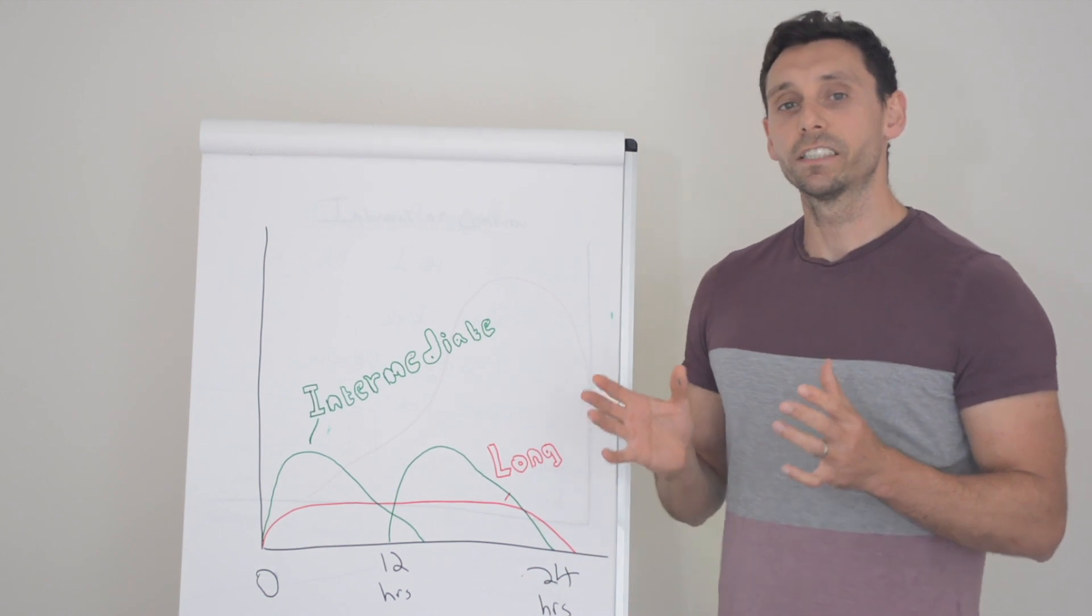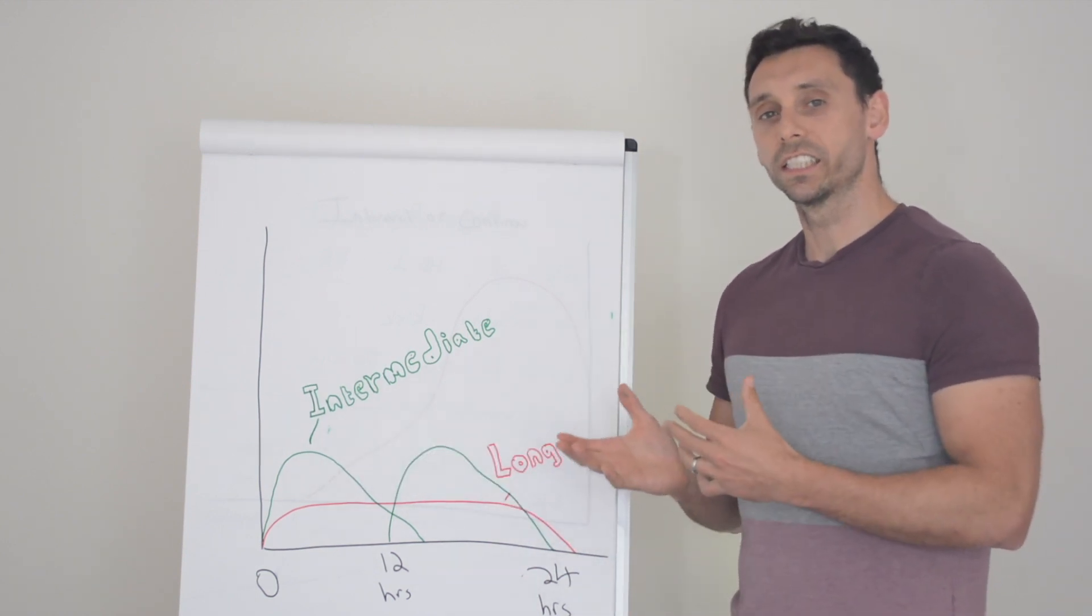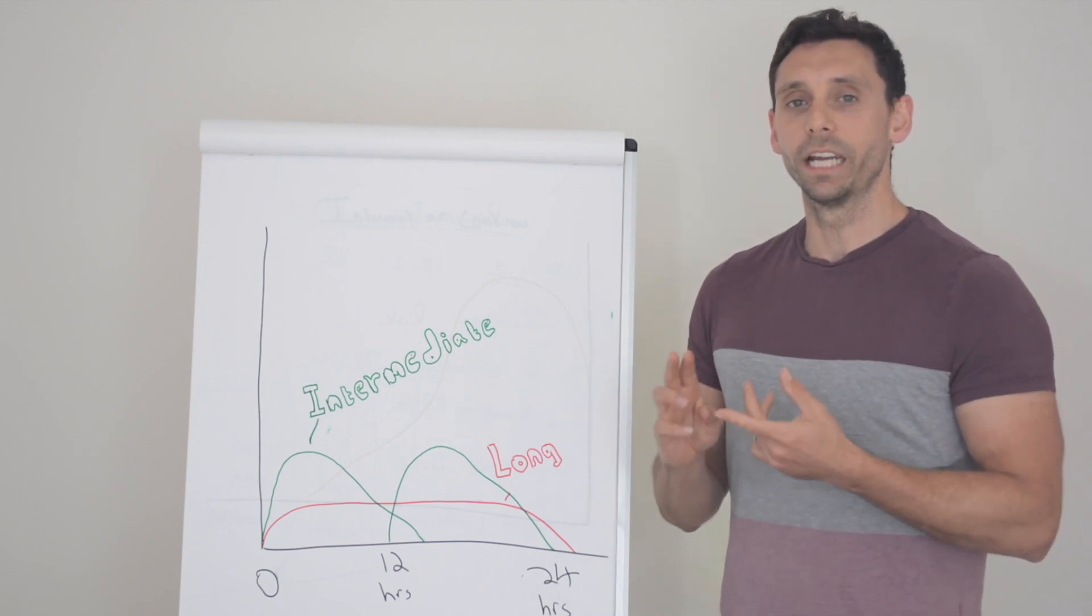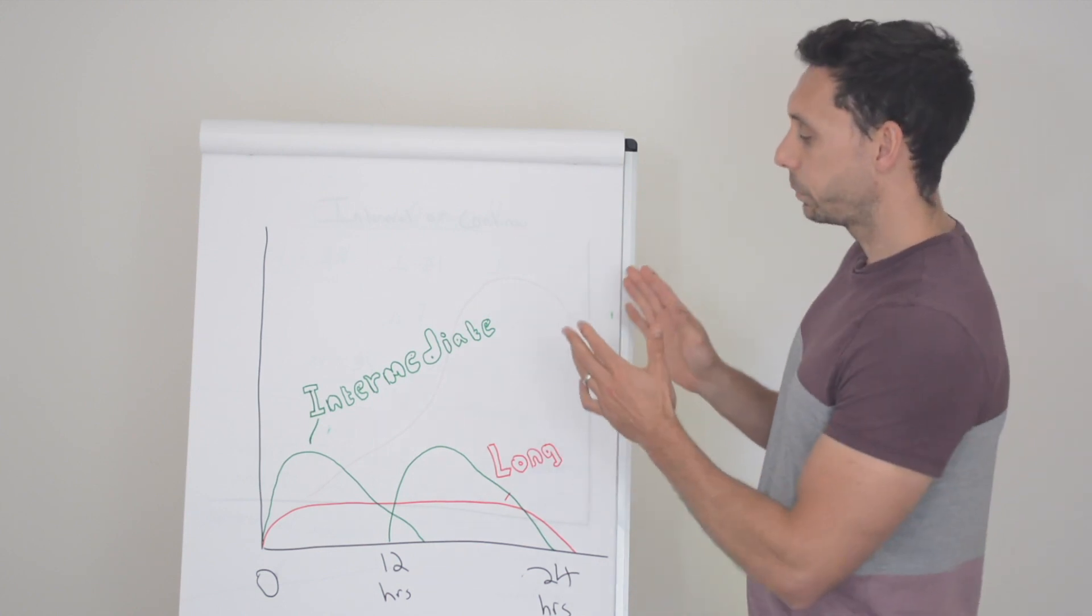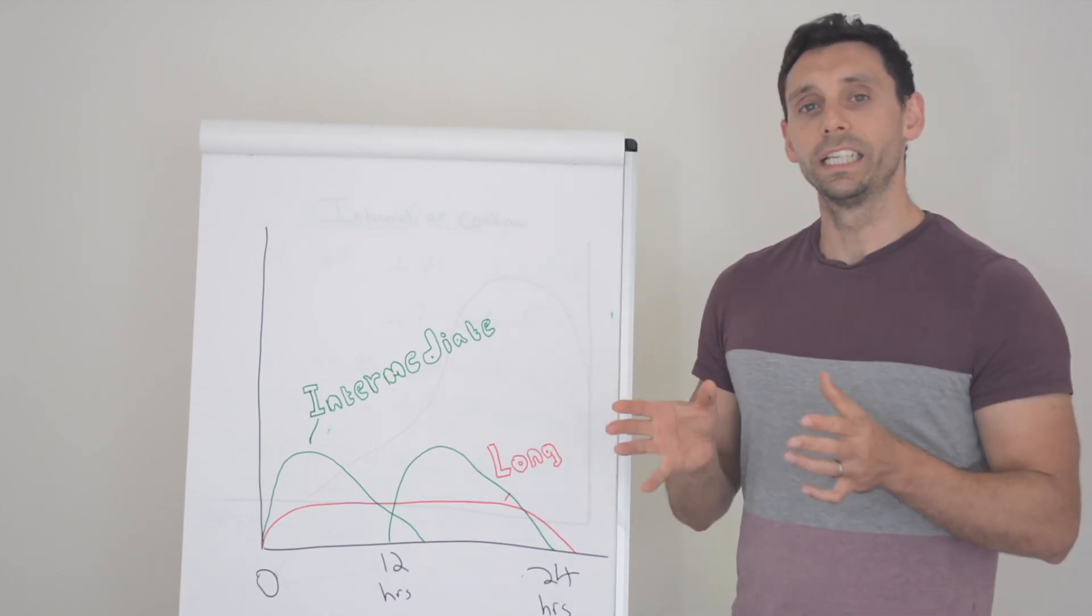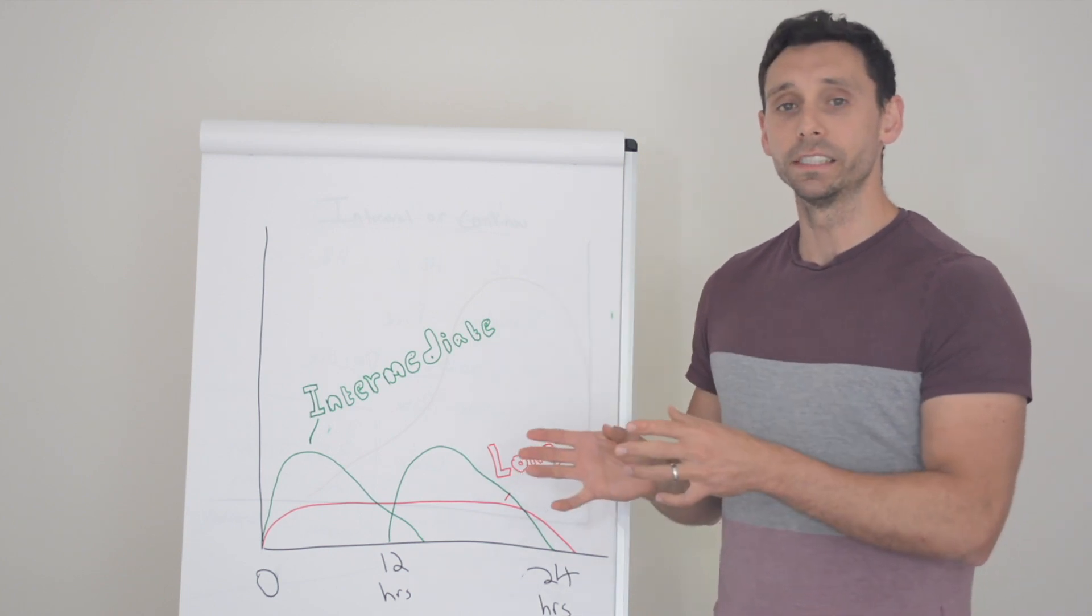One of the other key benefits of intermediate acting insulins is their profile tends to match quite nicely with the glucose rises seen from enteral nutrition and also steroid related hyperglycemia. So these tend to be our insulin of choice when we're dealing with glucose rises related to those medical therapies. What are the negatives of intermediate acting insulins?